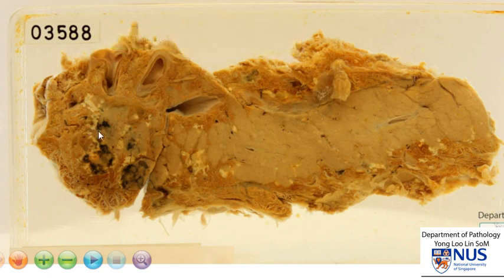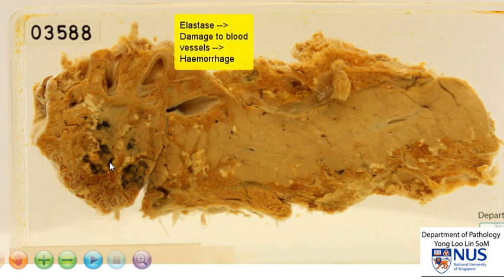In addition, there are some areas that are darker here. These represent areas of hemorrhage, and this is because of release of activated elastase enzymes. They act on the vessel walls to digest the elastic tissue, therefore leading to hemorrhage.